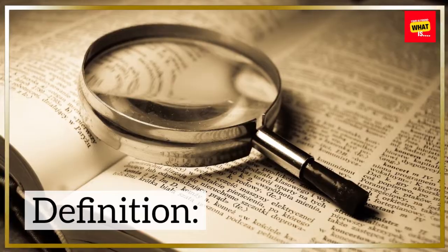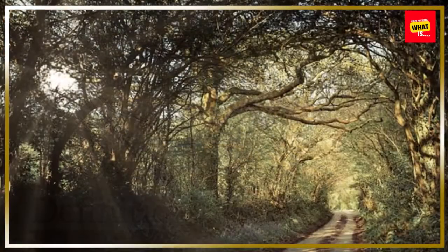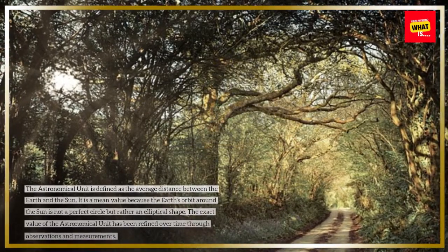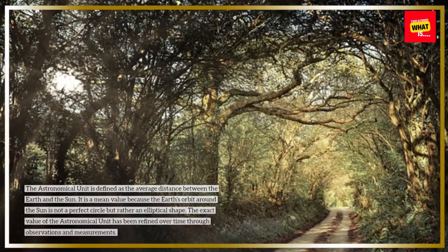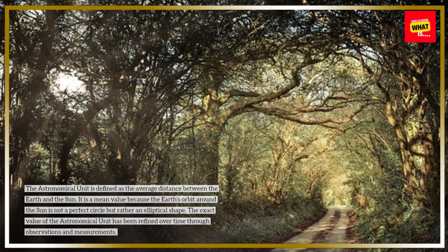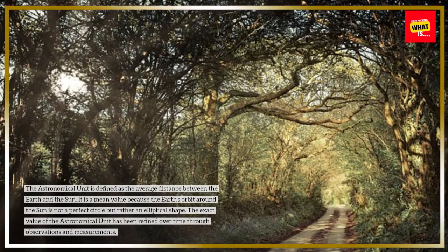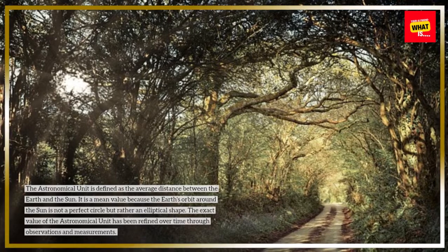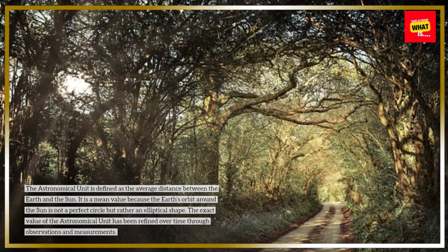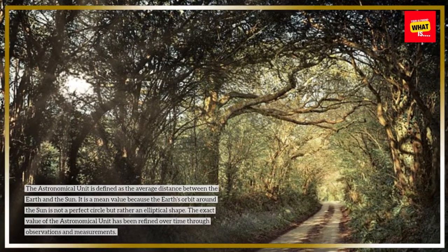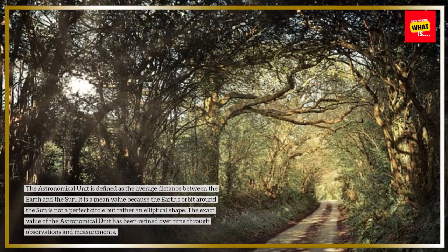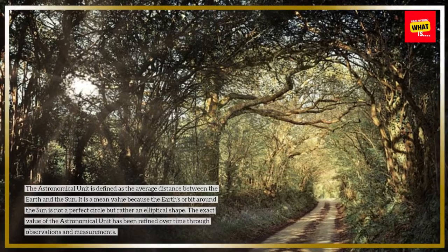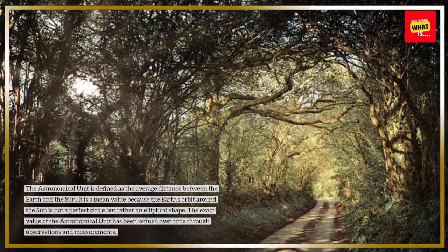Definition: The astronomical unit is defined as the average distance between the Earth and the Sun. It is a mean value because the Earth's orbit around the Sun is not a perfect circle but rather an elliptical shape. The exact value of the astronomical unit has been refined over time through observations and measurements.